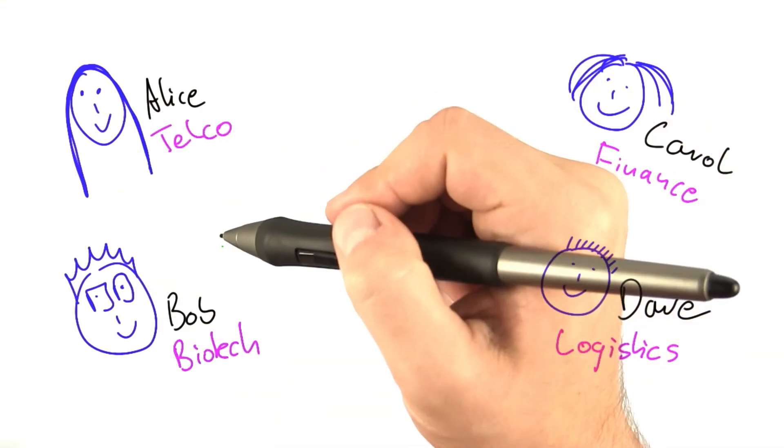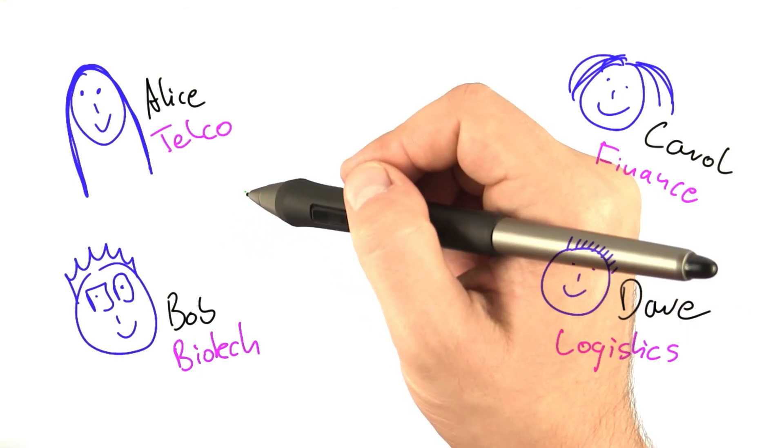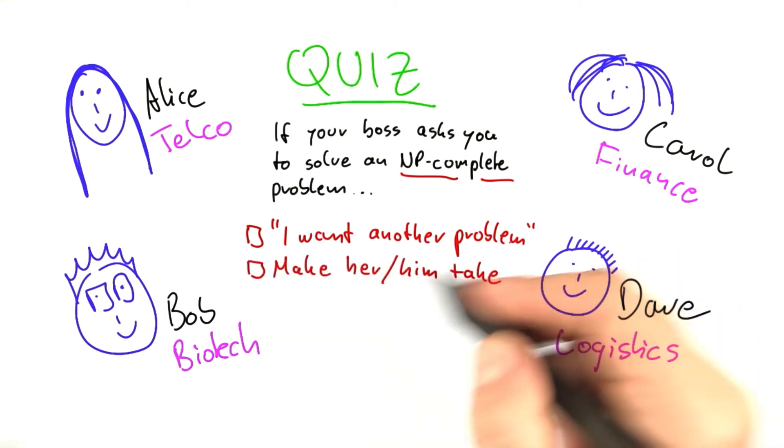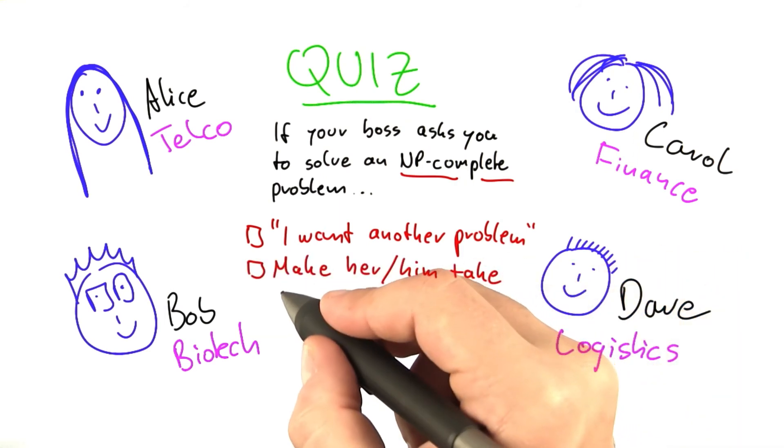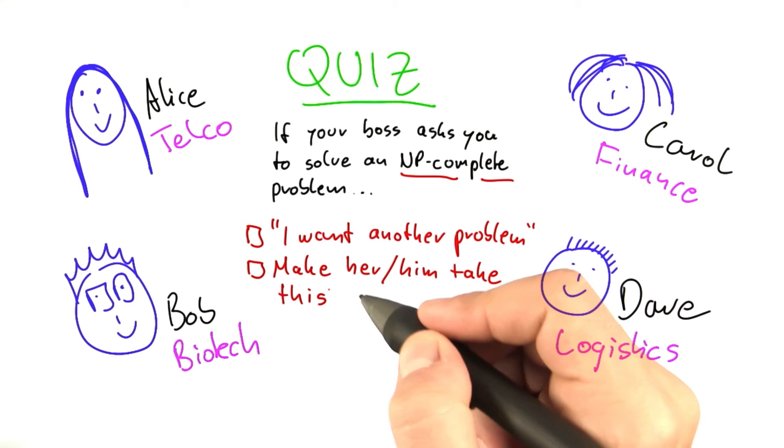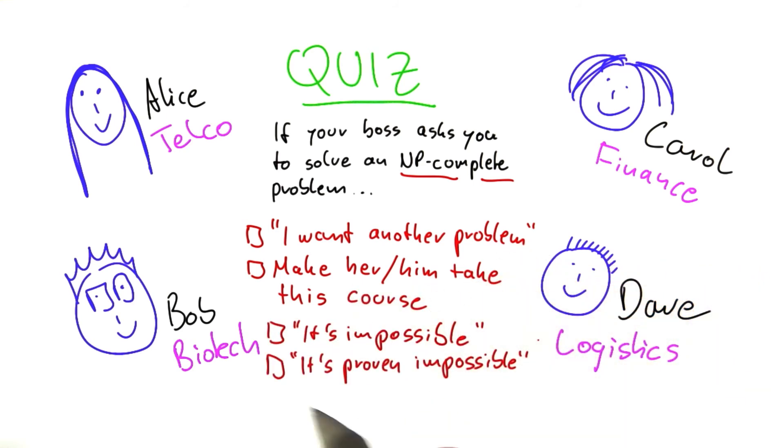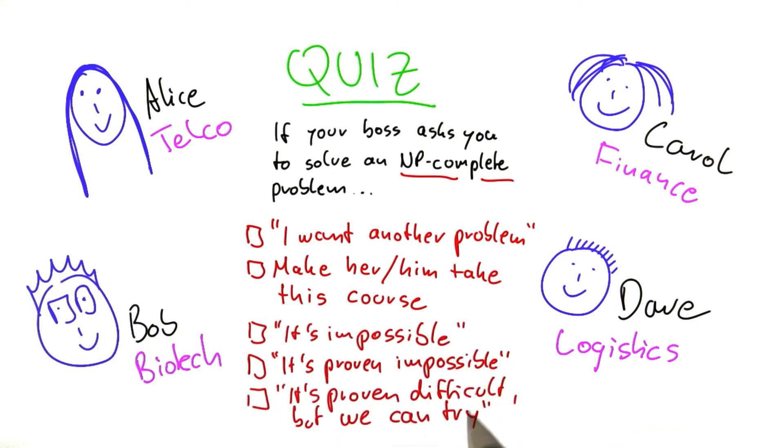So when your company or your boss asks you to solve an NP-complete problem, what should you do? Should you say, I want another problem? Should you make her or him take this course so that they finally understand NP-completeness? Should you say, it's impossible to do that? Should you say, it's proven impossible? Or should you say, it's proven difficult, but we can try?